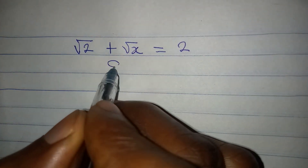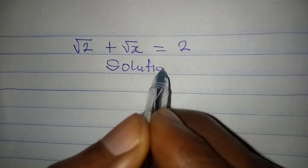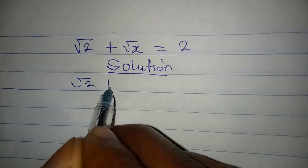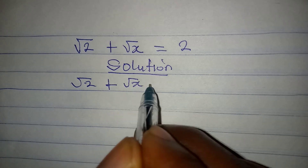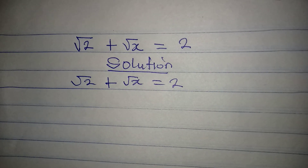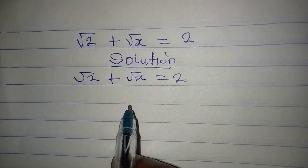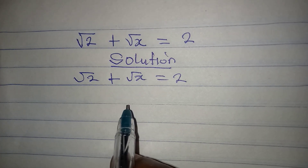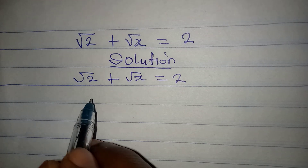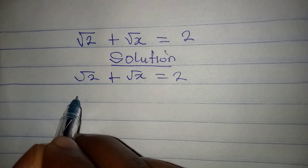Hello everyone, let's solve this very quickly. We have square root of 2 plus square root of x equal to 2. Please hold on and learn, and at the end of this video I want you to rate this video over 10. The first thing I want us to do is to square both sides.